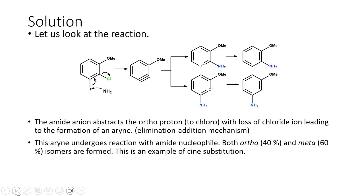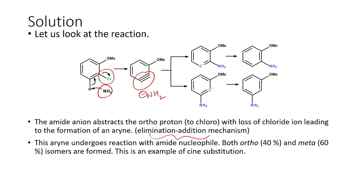This reaction basically follows an aryne mechanism — an elimination-addition mechanism. The base, NH2⁻ (amide anion), abstracts the ortho proton to the halogen unit. When this hydrogen atom is removed, there is concomitant removal of the chloride anion, leading to formation of the benzyne or aryne-type intermediate. This aryne intermediate can then be attacked by the NH2⁻ anion on either carbon.